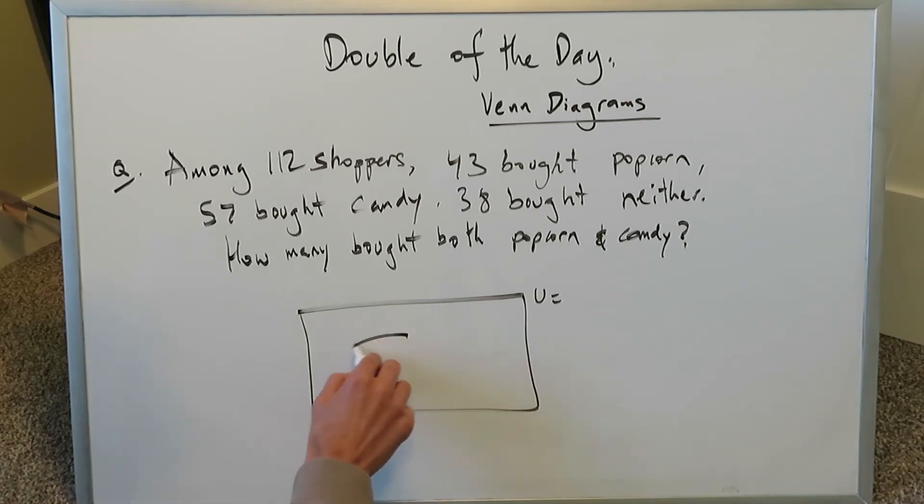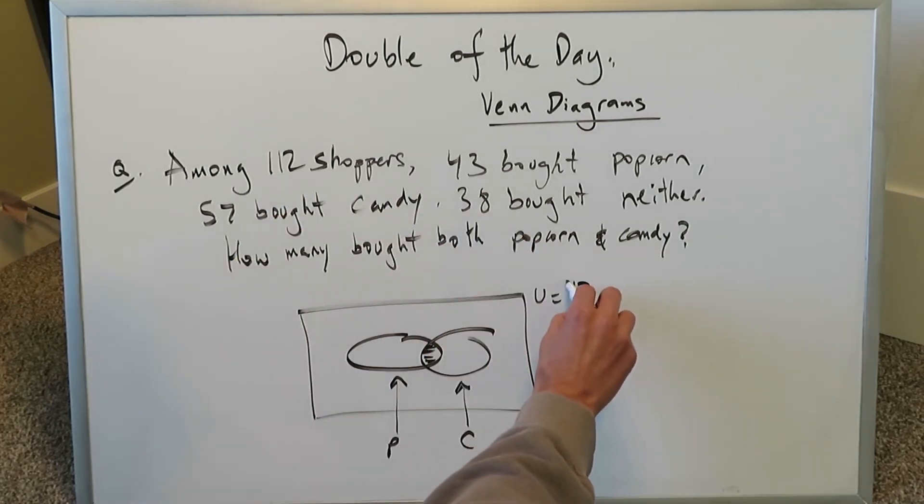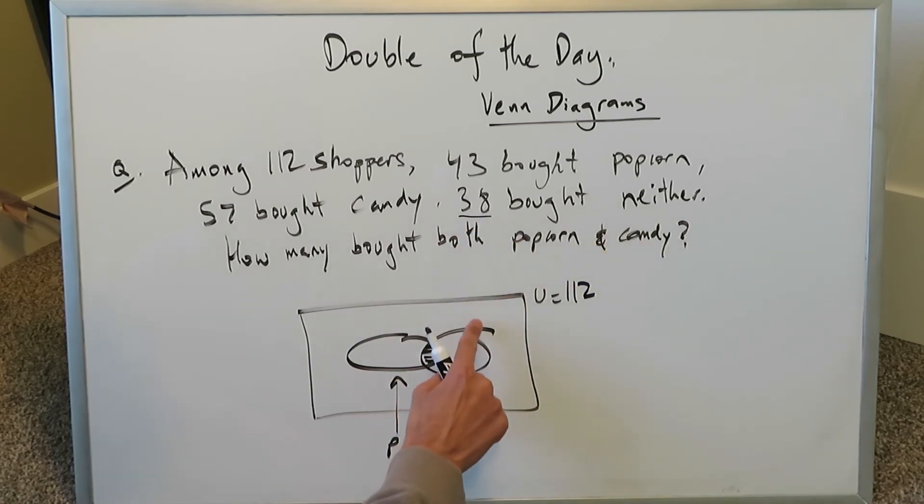Again, we know we're dealing with two subsets: P for popcorn and C for candy. We have to determine how many bought both, which is the intersection, because these are the people who bought popcorn and candy. A good fact we have is there are 112 total, that's your universal set. This right here, 38 bought neither, which means these 38 are outside the union of these two sets, so we can bring 38 out over here.